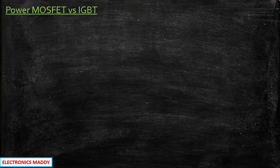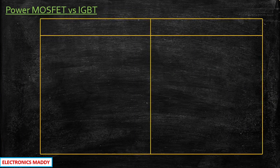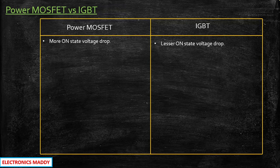We have seen the characteristics of power MOSFET and IGBT separately. Here we will see the main differences between them. In power MOSFET, the on-state voltage drop will be more, whereas in IGBT it is comparatively lesser. So we need to understand the reason behind this.